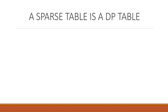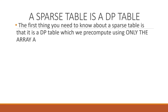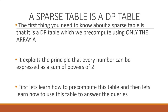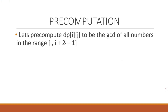The first thing you should know about a sparse table is that it's a DP table which we precompute using only the array a. Then using those precomputed values, we will answer our range GCD queries. The basic principle behind a sparse table is that every number can be expressed as a sum of powers of 2, and you will realize we are using this fact when answering queries.